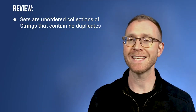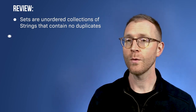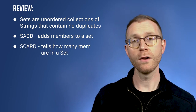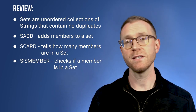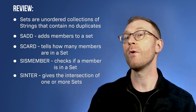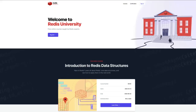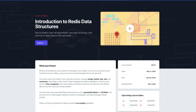To review: we learned that a set is an unordered collection of strings that contains no duplicates, and we reviewed the most important set commands. We learned about SADD, which adds a member to a set; SCARD, which tells us how many members are in a set; SISMEMBER, which checks if a member is in a set; and SINTER, which gives us the intersection of one or more sets. If you want to learn more about sets and other Redis data types, check out our free course RU101, Introduction to Redis Data Structures, at Redis University. Thanks for watching, and see you next time!